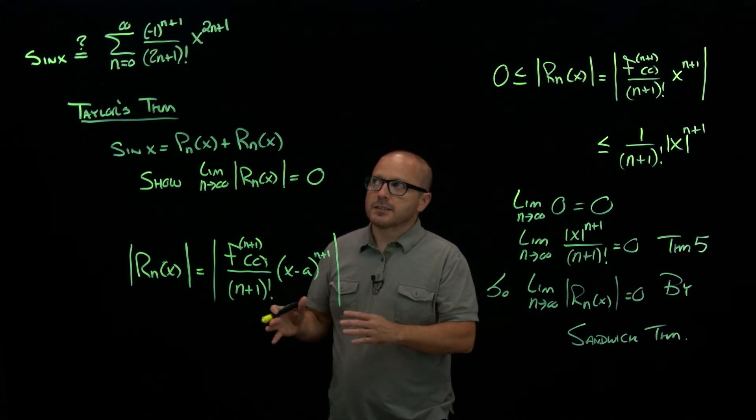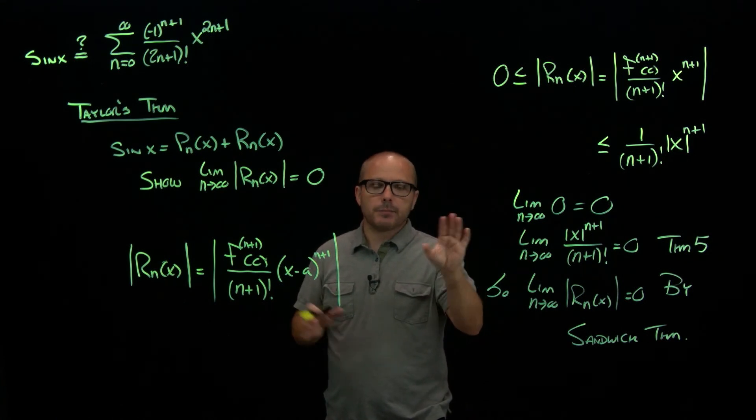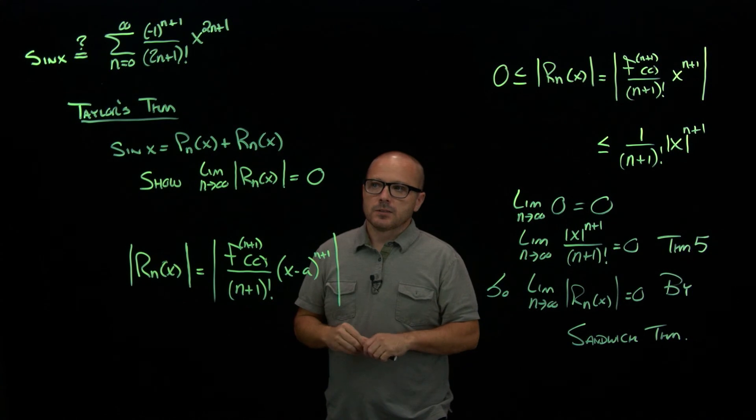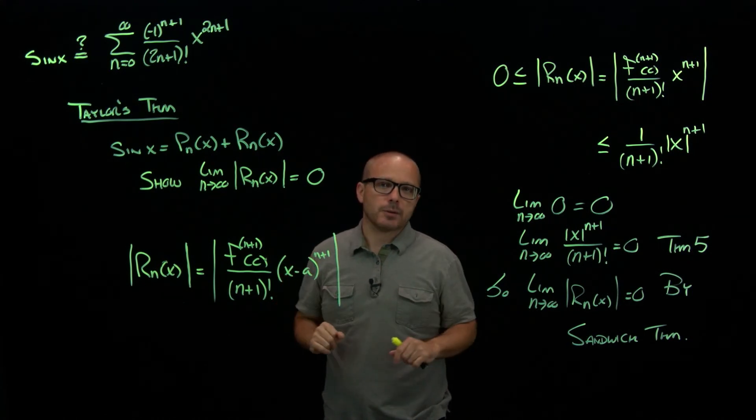What I'd like to show next is the same thing for e to the x. E to the x is a similar argument, but it does break into two cases. So I can't reuse this argument exactly, but this is the exact argument for sine or cosine.